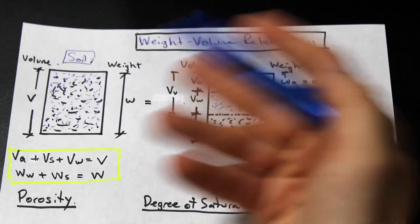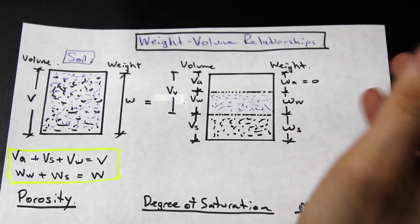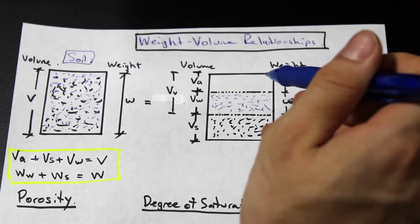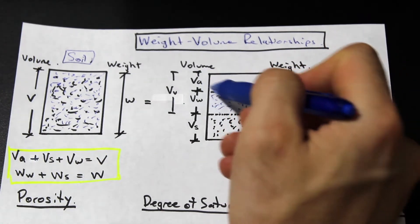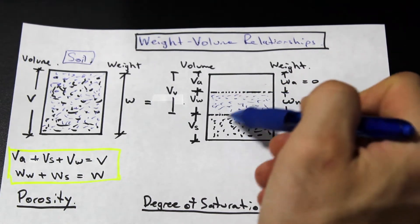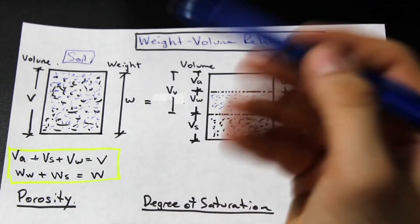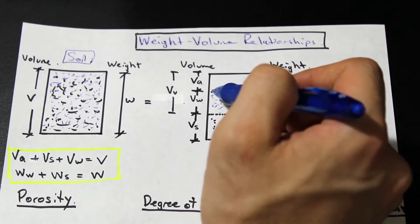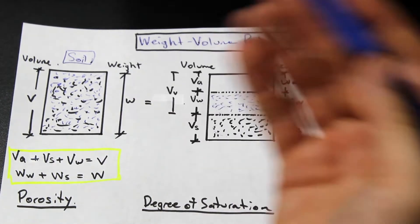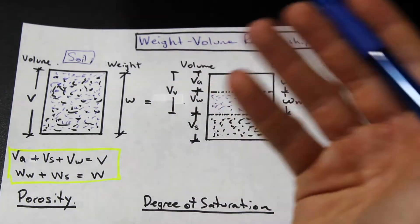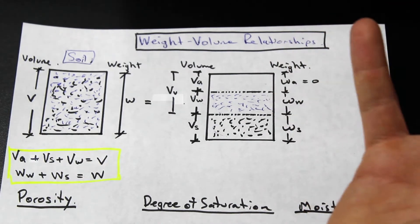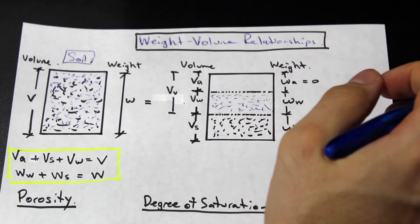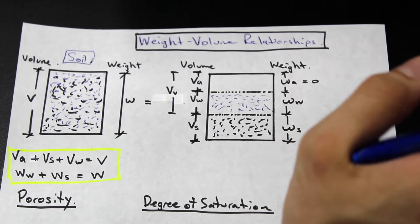From the phase diagram we can start to derive some weight-volume relationships, which help us solve important properties of soil. The soil is made up of three volumes: the volume of the air, the volume of the water, and the volume of the solids. The volume of the air plus the volume of the water equals the volume of the voids. When all of the voids are filled up with water, that means we have a soil that's fully saturated — 100% moisture content.